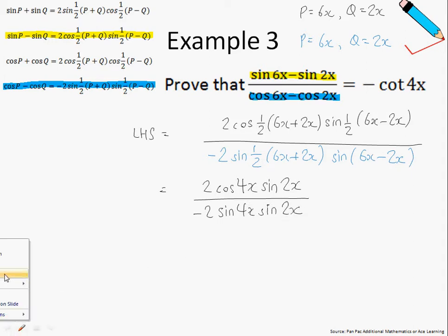So at this point in time, you will see that something really magical is happening because we can sort of eliminate the sine 2x by dividing throughout by sine 2x. And we can also divide throughout by 2, and this leaves me with the final answer, which is just negative of cotangent 4x.